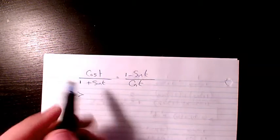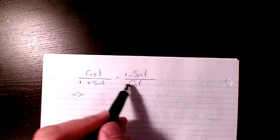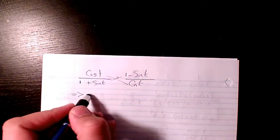In this example I have cosine t divided by 1 plus sine t equals 1 minus sine t divided by cosine t. So how can I do that? Basically the best thing is to do cross multiplication.